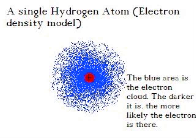Schrödinger developed the probability functions, and gave us what we know today as the electron cloud model. This was all developed around 1926.